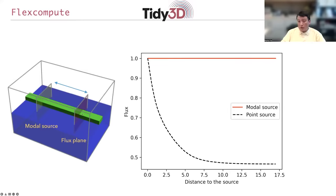So what we plot here is the flux as a function of distance of the flux plane from the source.